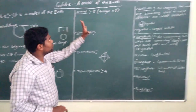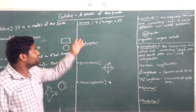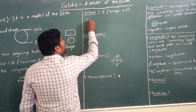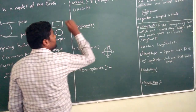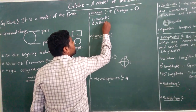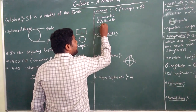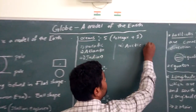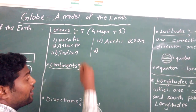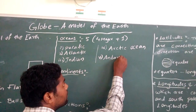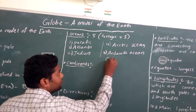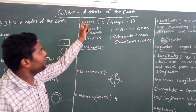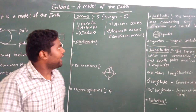If you see the continents, we have seven. If you see the oceans, we have five oceans — four major oceans and one minor ocean. The major oceans: first one, Pacific Ocean; second one, Atlantic Ocean; third one, Indian Ocean; fourth one, Arctic Ocean; and coming to the fifth one, it is said to be Antarctic Ocean.